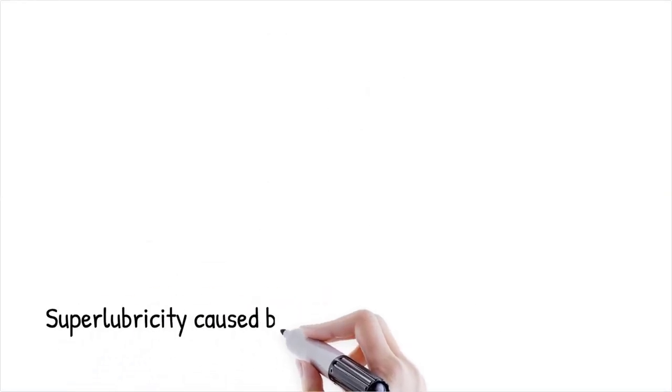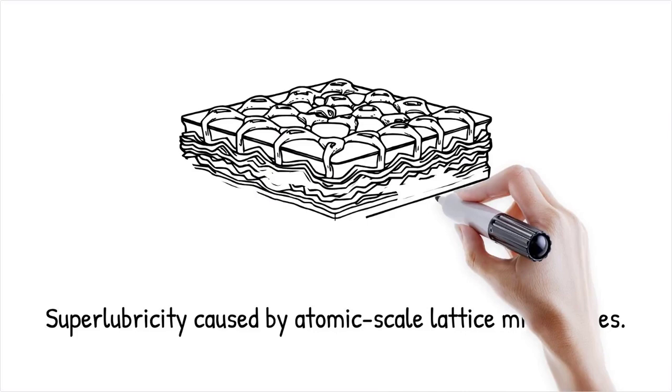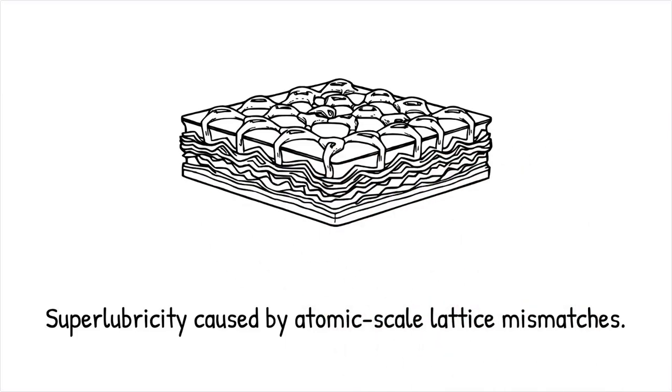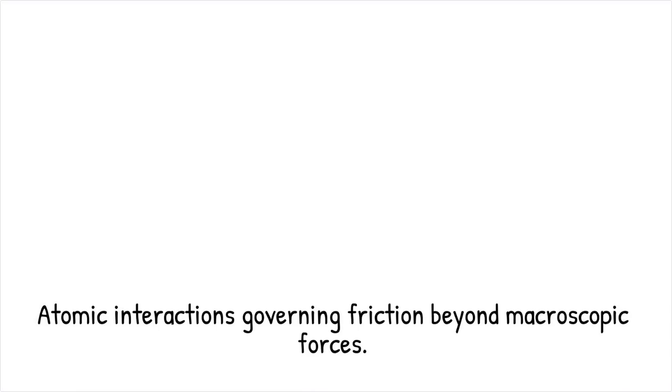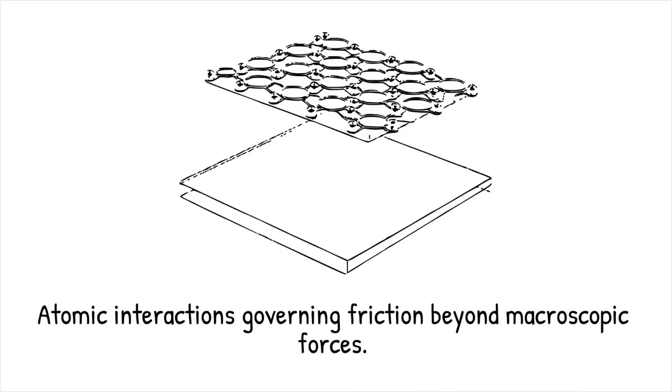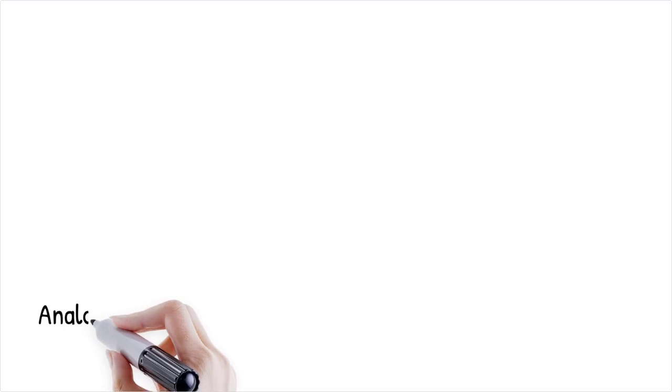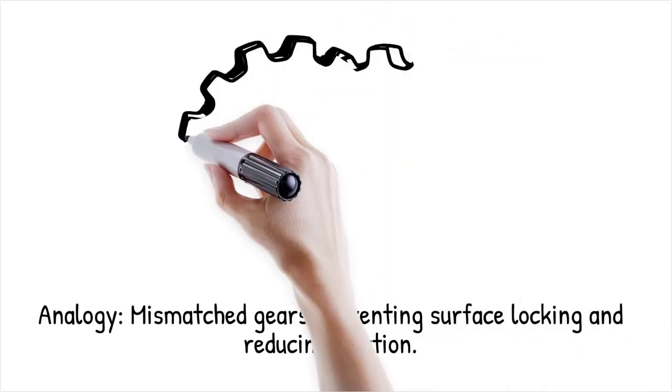Superlubrication occurs when surfaces slide with negligible resistance due to atomic scale effects, such as lattice mismatches, reducing energy dissipation. Recent studies show that under certain conditions, such as specific twist angles in layered materials, friction drops almost to zero, contradicting conventional expectations. This phenomenon suggests that friction is not purely a macroscopic force but is governed by atomic interactions that can disrupt classical assumptions. Experiments with hexagonal boron nitride and twisted graphene layers show nearly frictionless motion when the atomic structures are misaligned. Like mismatched gears that fail to engage, misaligned atomic lattices prevent surfaces from locking together, drastically reducing friction.